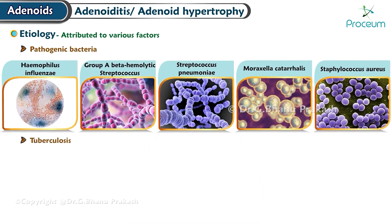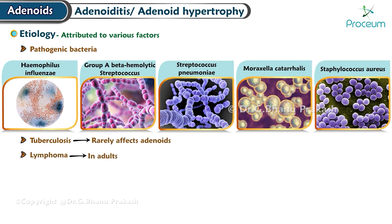Tuberculosis rarely affects the adenoids. Adenoid hypertrophy in adults, while not common, should raise concerns about the possibility of lymphoma.